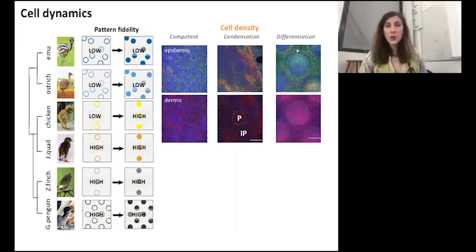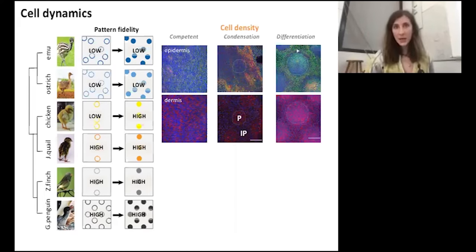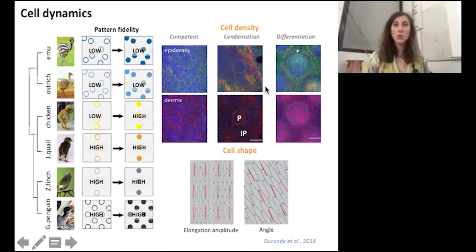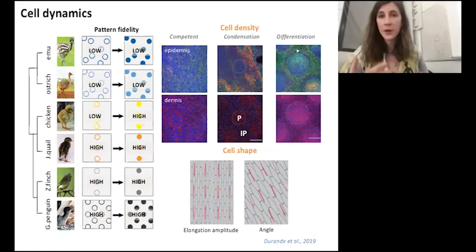First we looked at cell density, and to cut the long story short, we never saw a correlation between cell density and pattern fidelity. We therefore focused on another cell behavior, which is cell shape. To quantify it, we measured the anisotropy of the average cell shape.